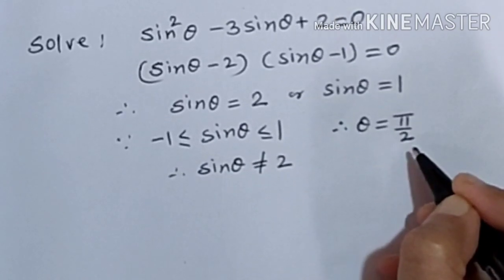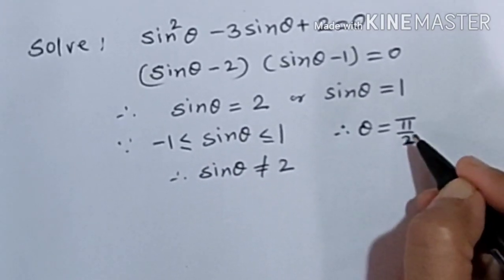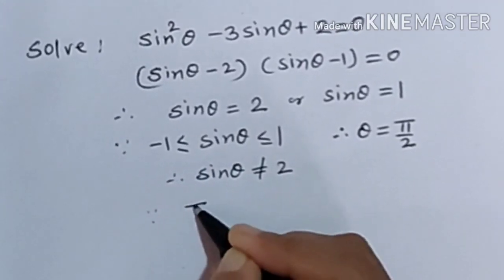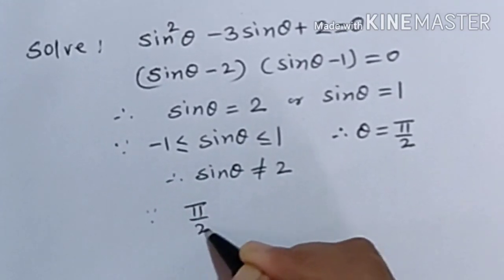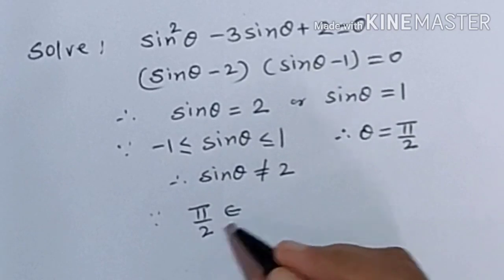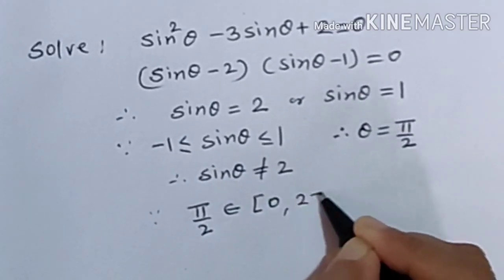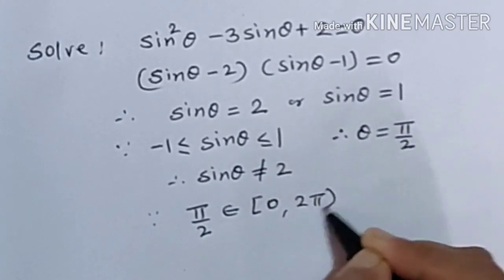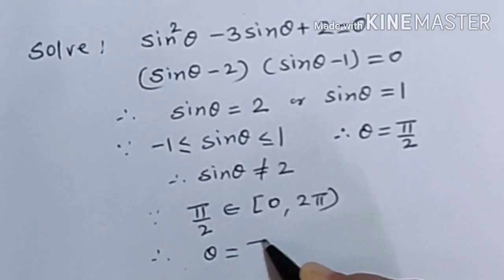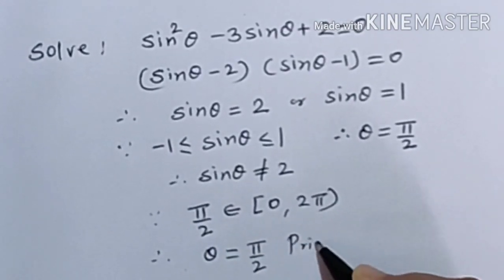We want to find the principal solution, so we check whether this value lies in the interval 0 to 2π. Since π/2 belongs to the interval [0, 2π], therefore θ = π/2 is the principal solution of the given equation.